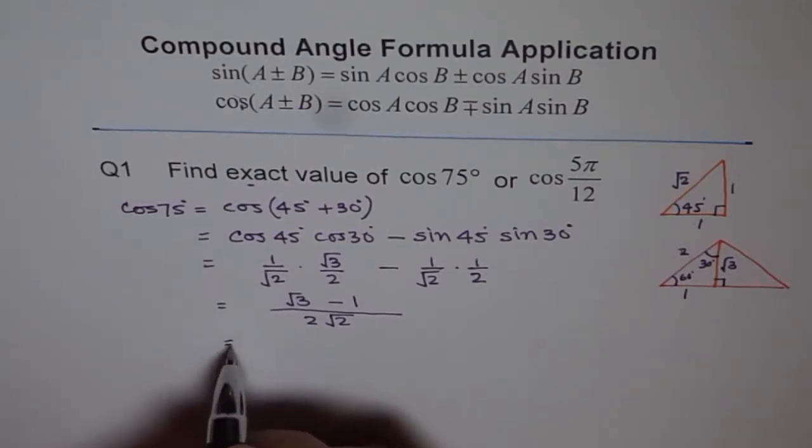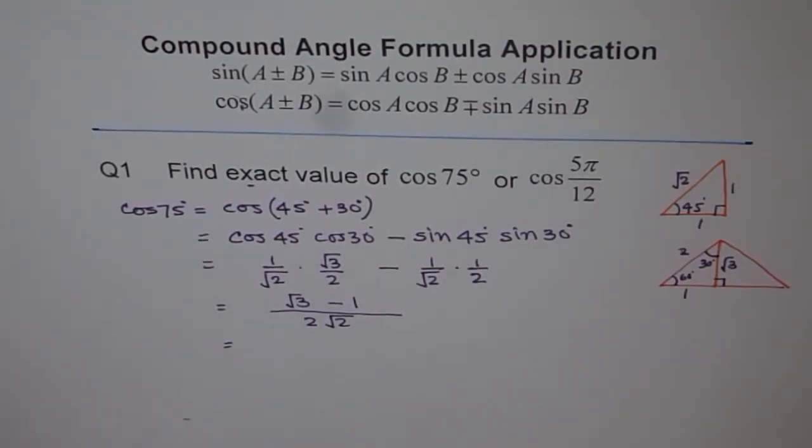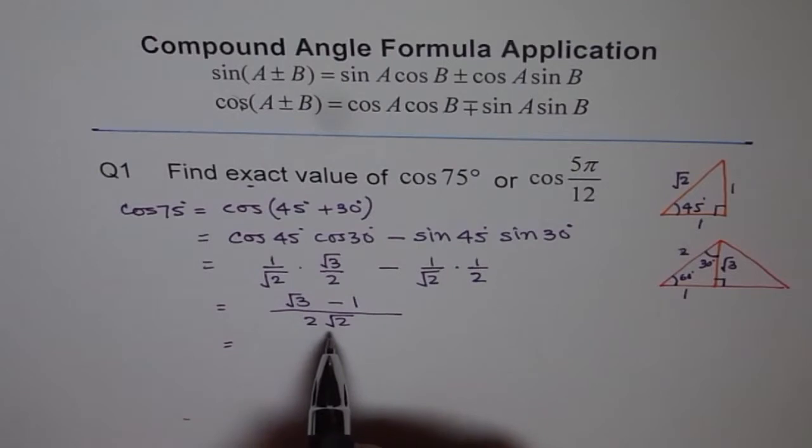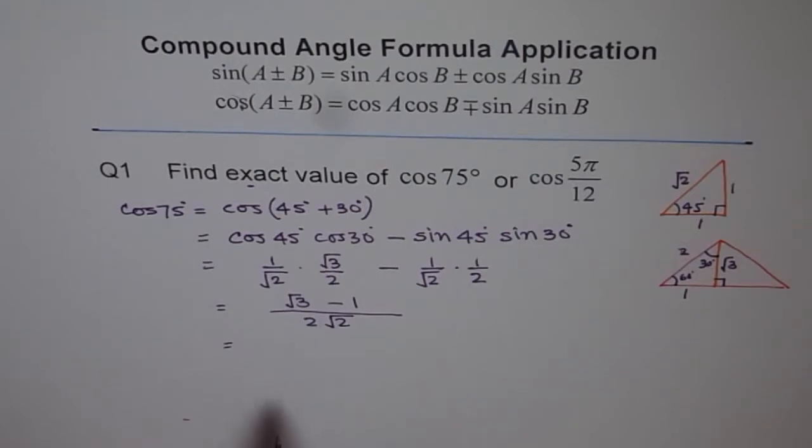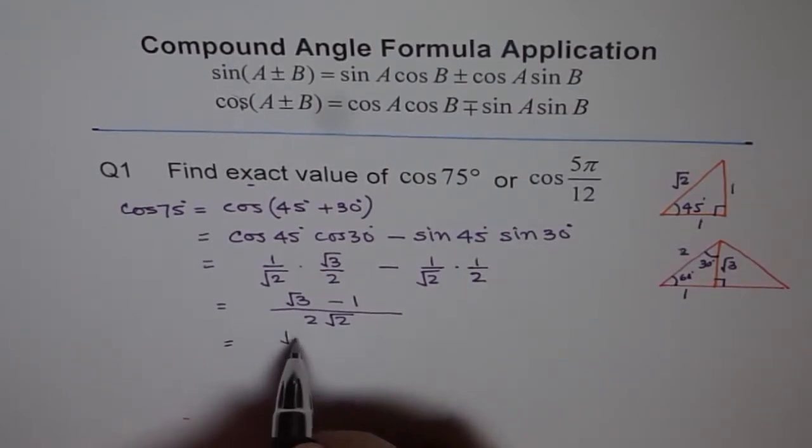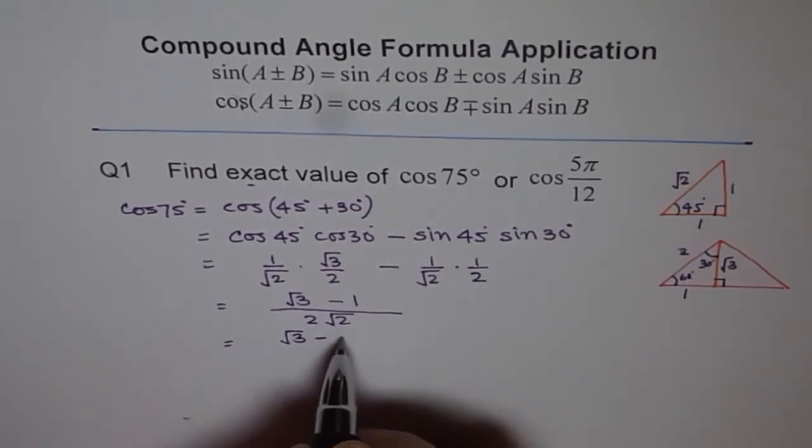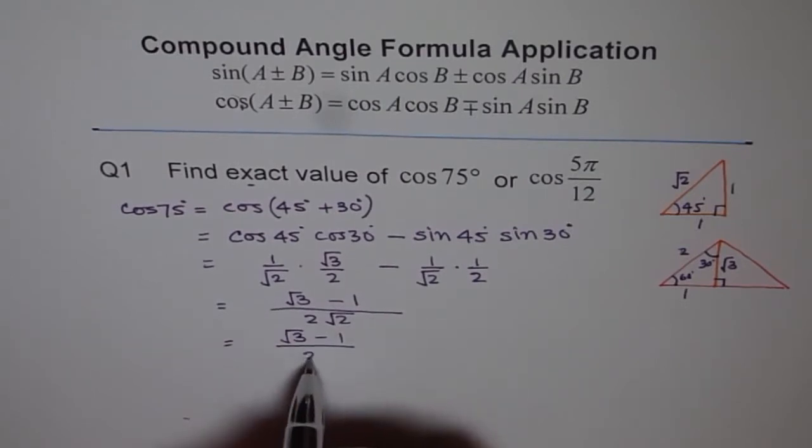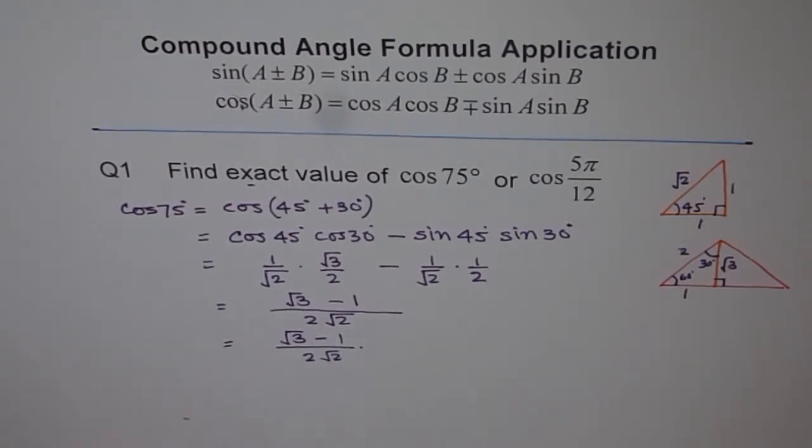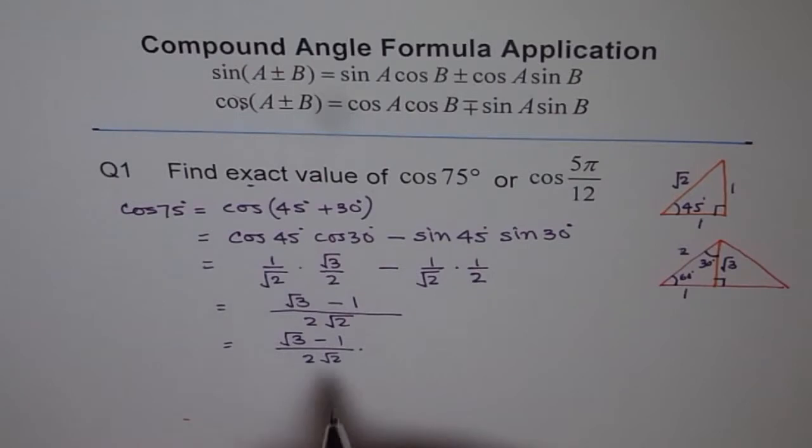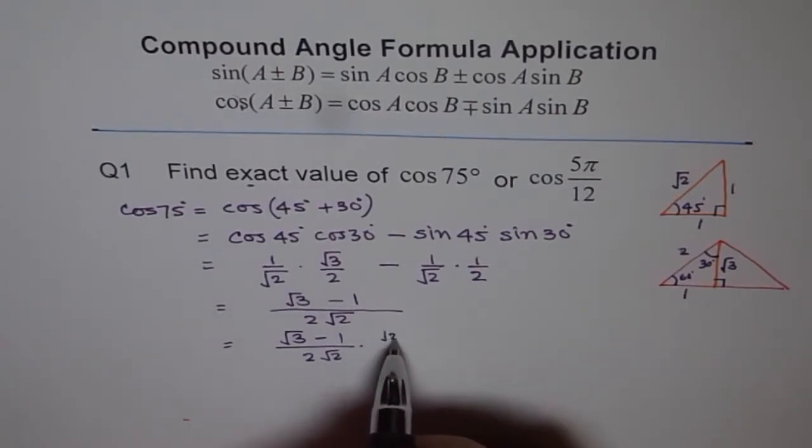But, at times, what we need to do is, we need to rationalize it, right? It is not a good practice to leave √2 in the denominator. Well, some teachers do accept it. In that case, you may leave it like this. But, I will prefer to rationalize it. Rationalization means to multiply in such a way that we get rid of √2. That means, I should multiply by √2 and divide by √2.